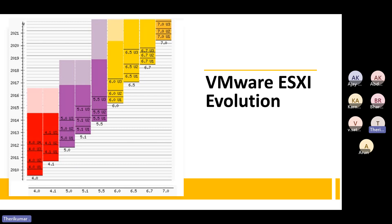Technology is now changing. Security attacks are changing. Performance can be slow. That is why new versions are available. In 2010, version 4.0 came. In 2011, version 4.1. Then 5.0, 5.1, 5.5. Version 5.5 is the most important product in VMware.